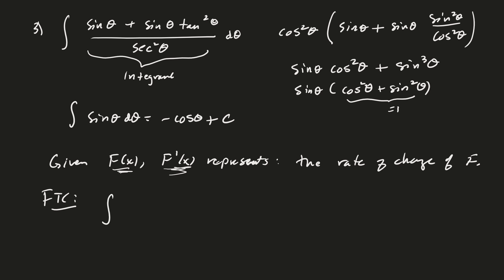Then by the FTC, the fundamental theorem of calculus, if you integrate from a to b, f prime of x dx, we get the antiderivative, which is f evaluated at b, minus the antiderivative at a. And this is the net change of f from a to b. So, for example, if f of x is the population at time x, then f prime is the rate of change of that. And so if you integrate from a to b, this is the population at time b, minus the population at time a. So that's the net change in a population from time a to time b.